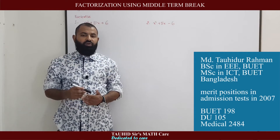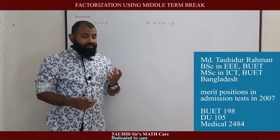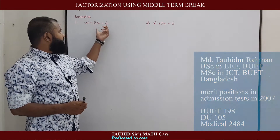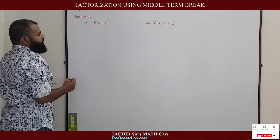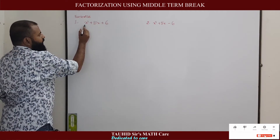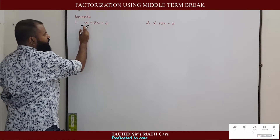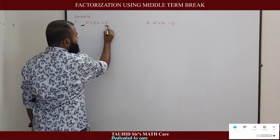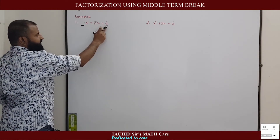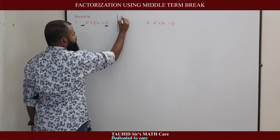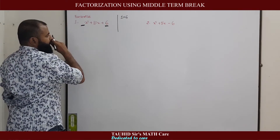Now we will learn factorization with the process of middle term breaking. This is used with expressions of the shape ax² + bx + c. The process involves checking the coefficient of x² and the constant term. We will multiply the first coefficient and the third coefficient — here we multiply 1 and 6, where the coefficient of x² is 1.